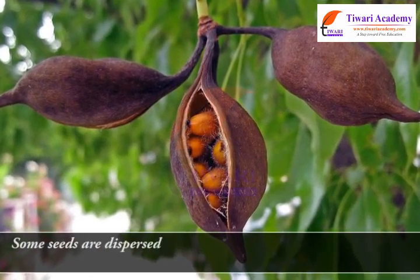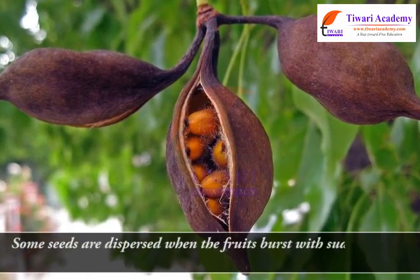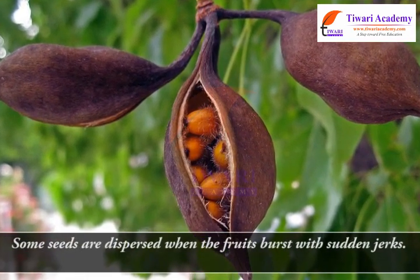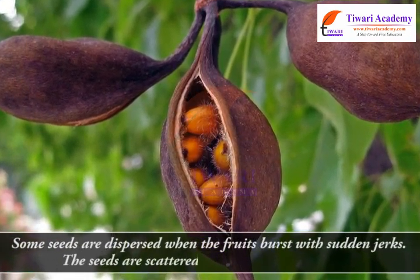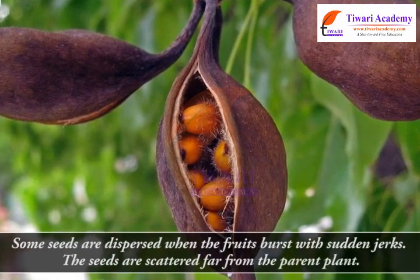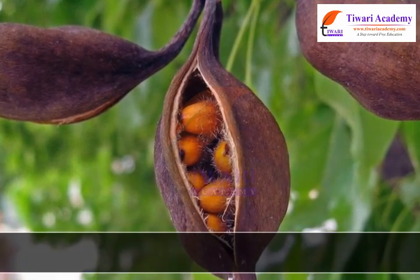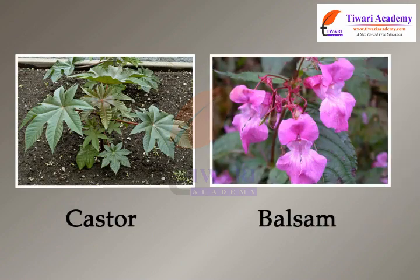Some seeds are dispersed when the fruits burst with sudden jerks, scattering the seeds far from the parent plant. This happens in the case of castor and balsam.